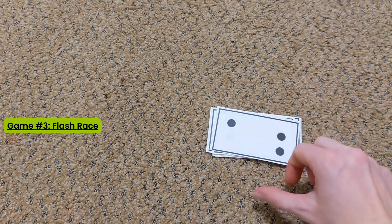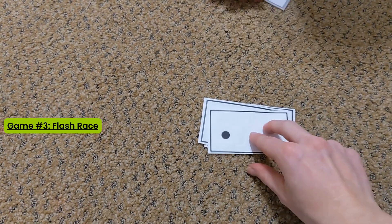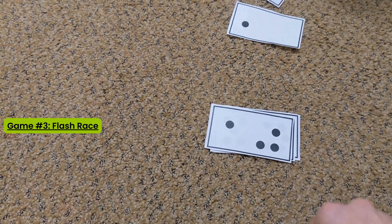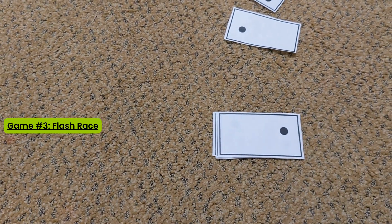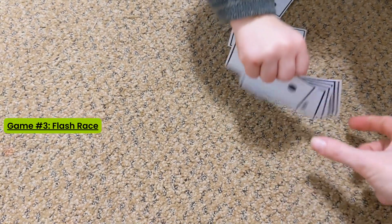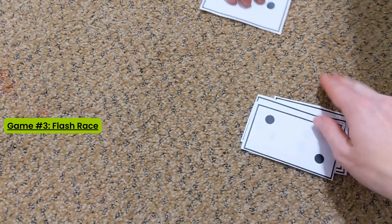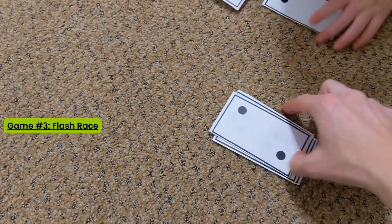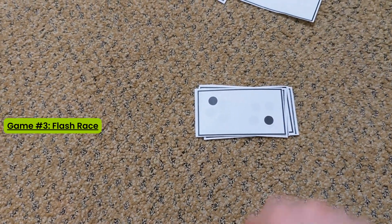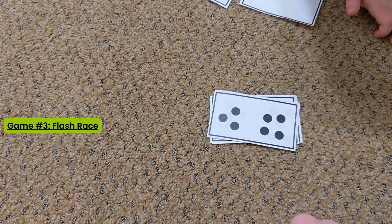The last number sense game that we're going to play with these subitizing cards is called Flash Card Race. And you can have a teacher flash the card for two students to view. The first person to say the correct number wins.